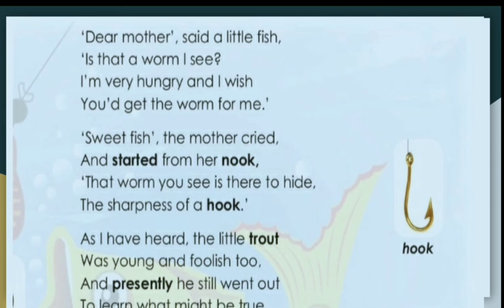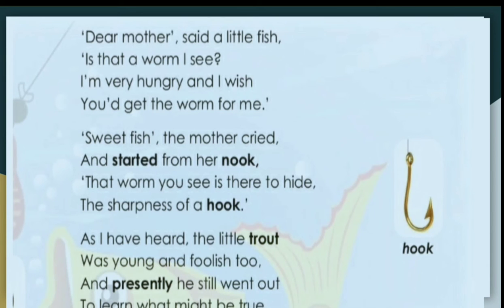The mother of the fish came from a corner and told her child that the worm you see is there to hide the sharpness of a hook. The mother fish told her child that the worm is hiding a hook — it is a trap set by the fisherman, and if you go close to the worm, you will get killed.